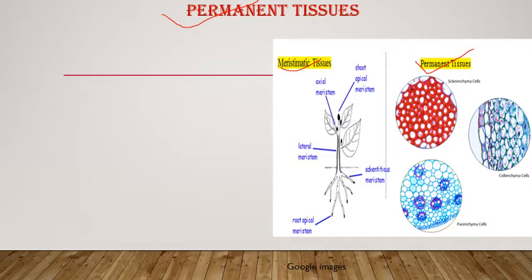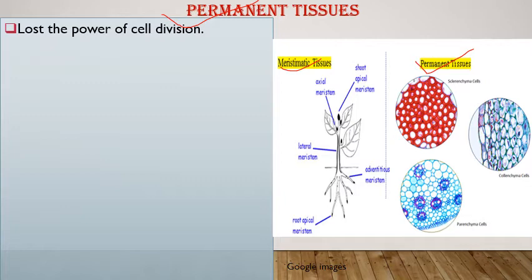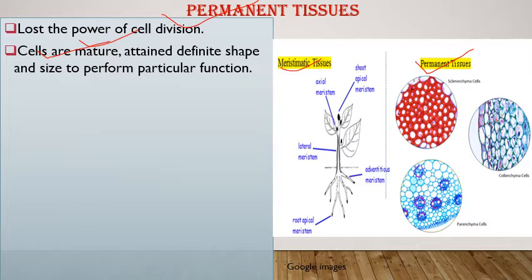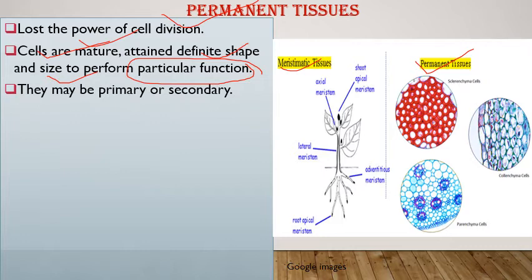Characteristic features of permanent tissue: first, they lose their power of cell division. Second, the cells mature and attain a definite shape and size — for example, leaf cells that perform photosynthesis attain their definite shape and size to perform that particular function. They are permanently converted and may be primary or secondary.